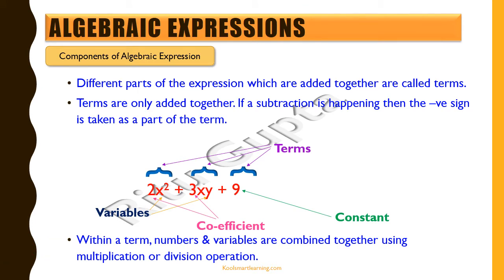Within a term, numbers and variables are combined together using multiplication or division. For example, in the term 2x², the number 2 is multiplied with x to the second power.